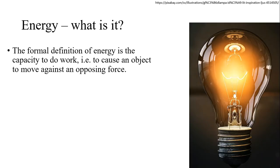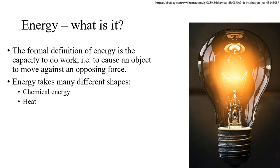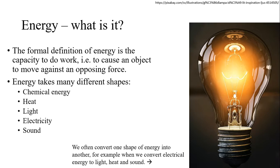So let's start by talking about energy. Energy is formally defined as the capacity to do work, to cause an object to move against an opposing force. What this pretty much means is that it's things happening in general. In order for something to happen there must be energy behind it, and energy may take many different shapes. We can talk about chemical energy which we'll do during this course, heat, light, electricity, sound and so on. Very often we convert one shape of energy into another. For example, we can convert electrical energy to light in a light bulb like this. The old-timey light bulbs also generated quite a lot of heat. They got really warm and if you put your ear very close to it you heard a slight vibration. So the electricity was converted to heat, light and energy.